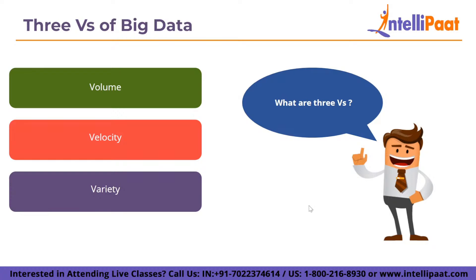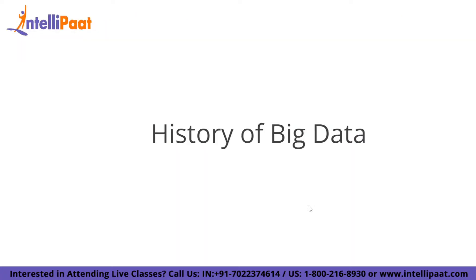The third V is variety — the various types of data available. Traditional data types are well-structured and easily fit into relational databases. With the rise of big data, new unstructured data types have emerged such as text, audio, and video, which are examples of unstructured and semi-structured data types that require additional pre-processing to derive meaning and support the metadata.